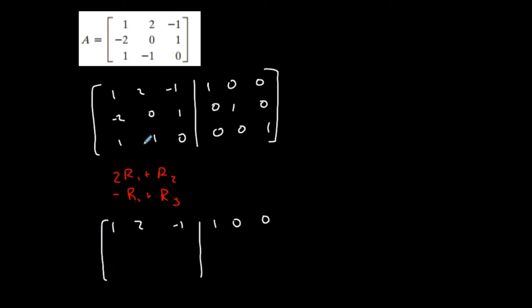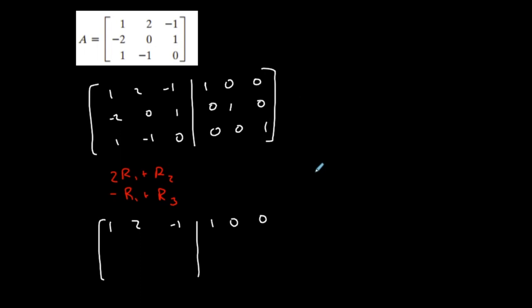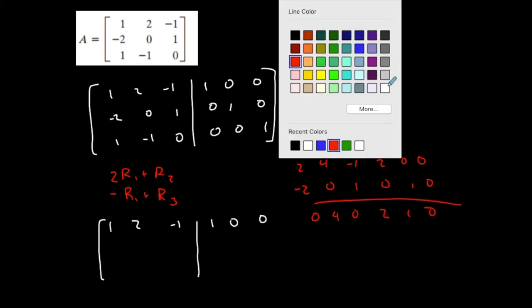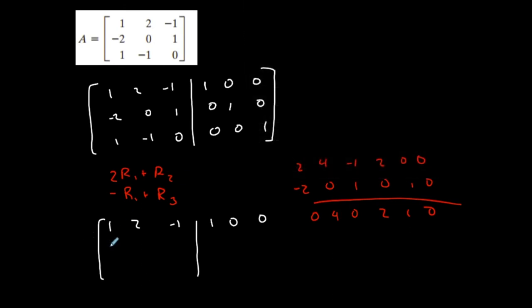For row two: twice row one gives 2, 4, negative 2 | 2, 0, 0. Plus row two which is negative 2, 0, 1 | 0, 1, 0. Adding them together: 0, 4, negative 1 | 2, 1, 0. So row two becomes 0, 4, negative 1 | 2, 1, 0.